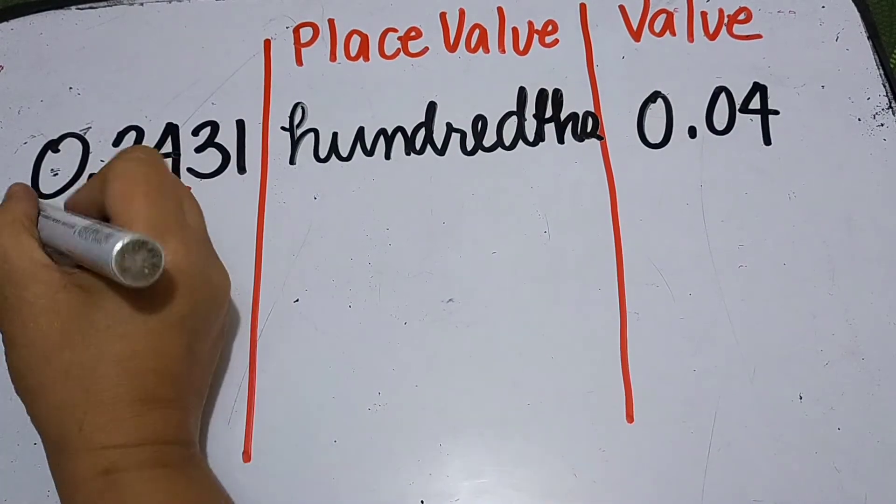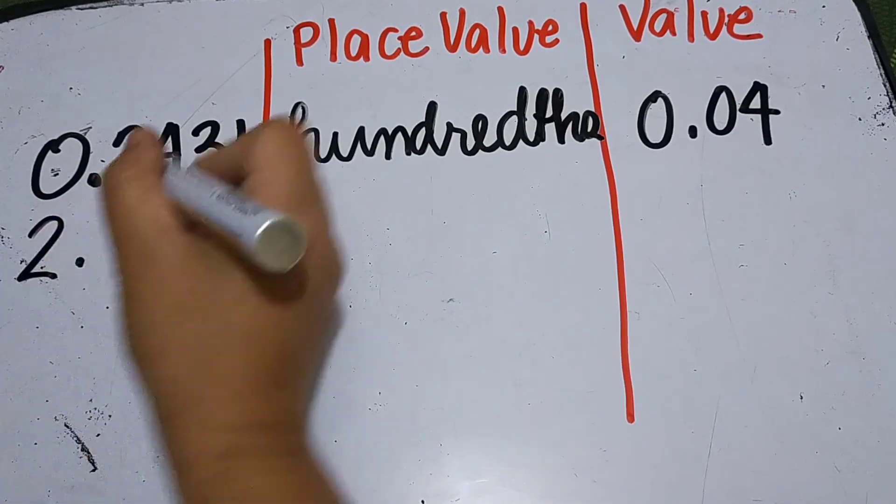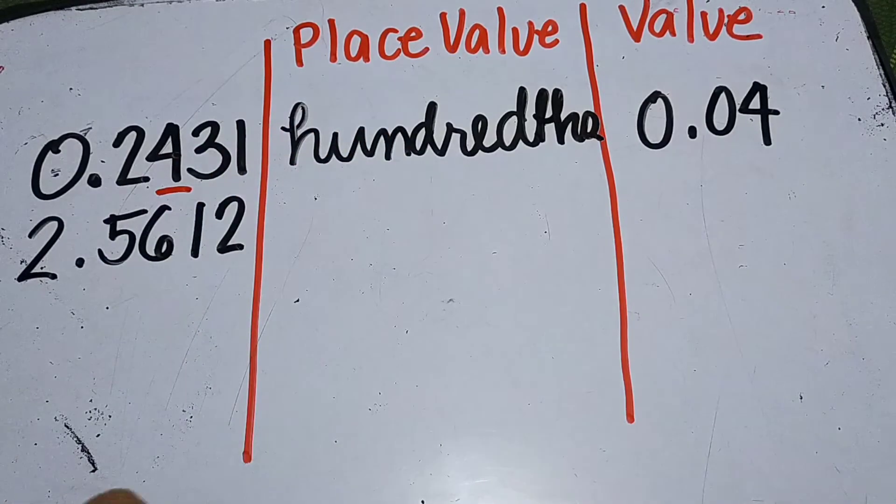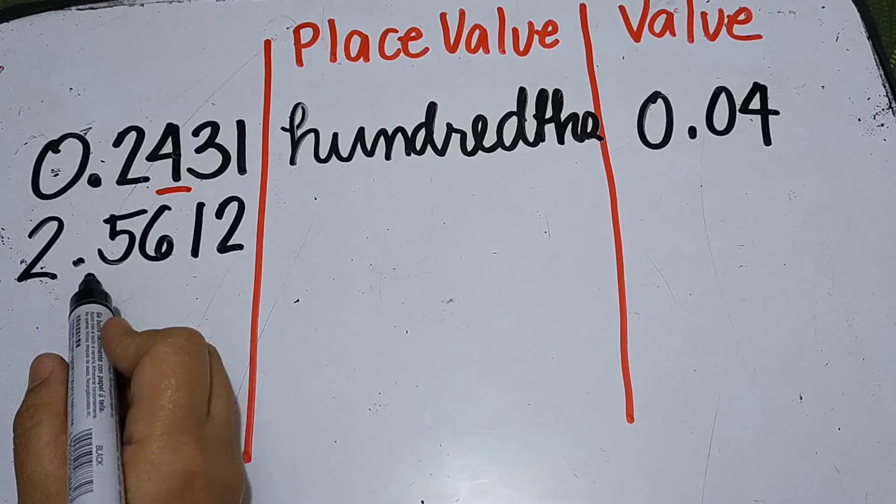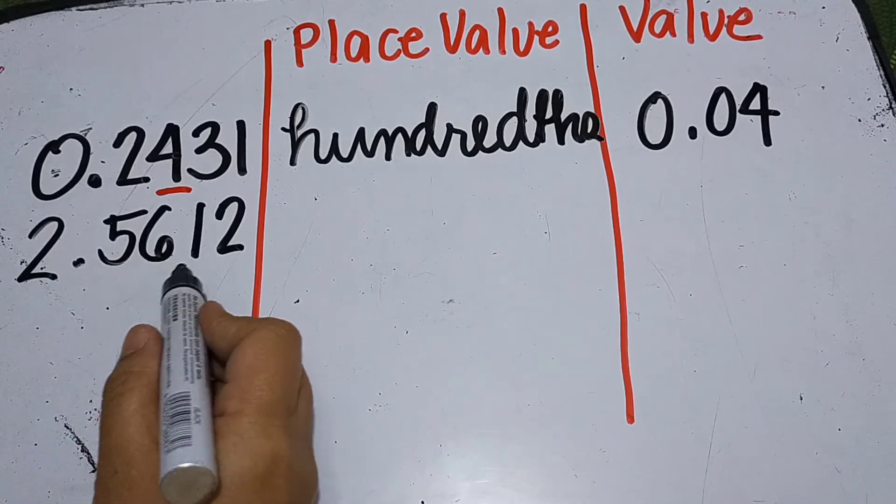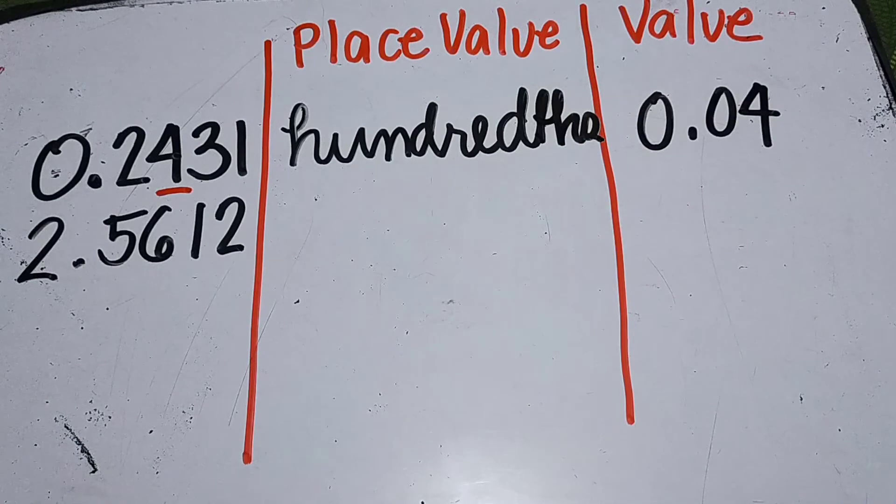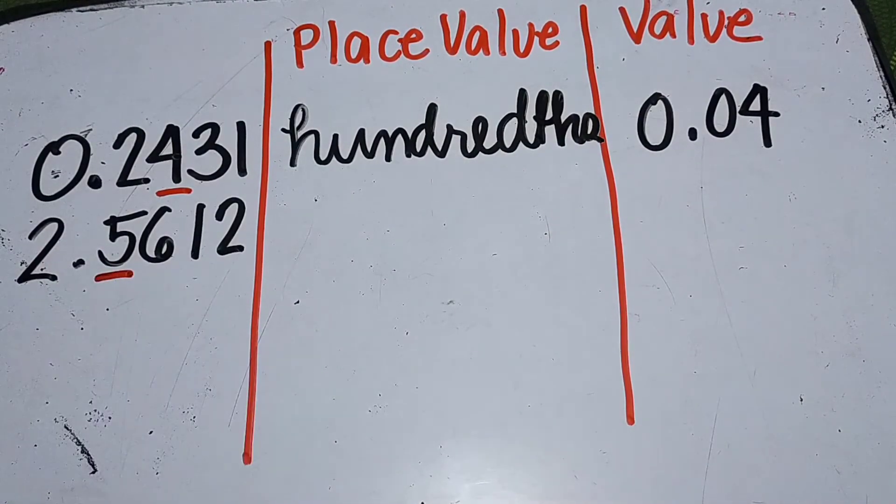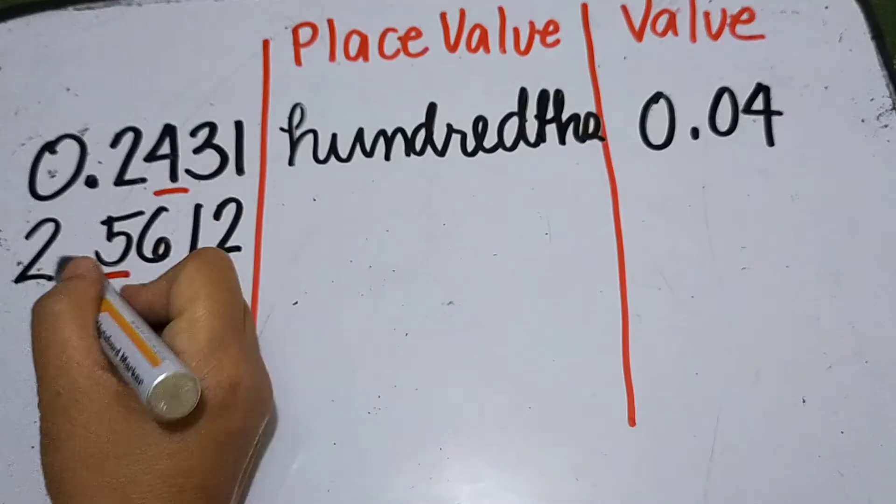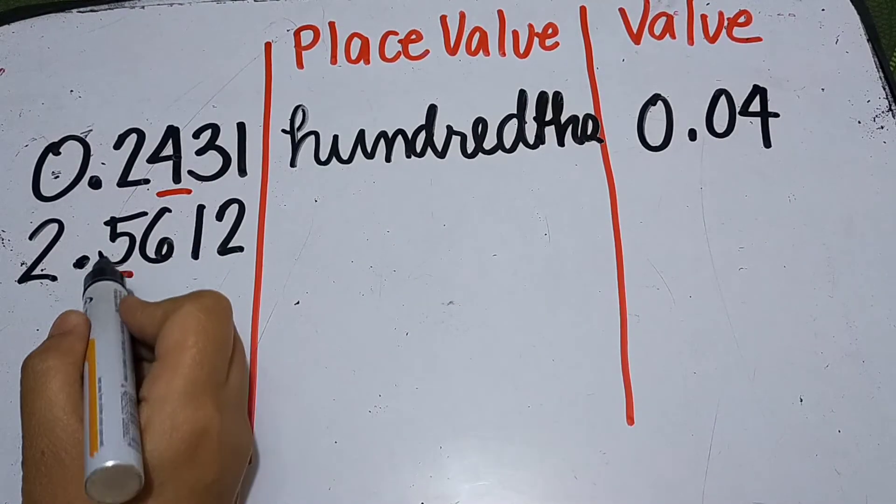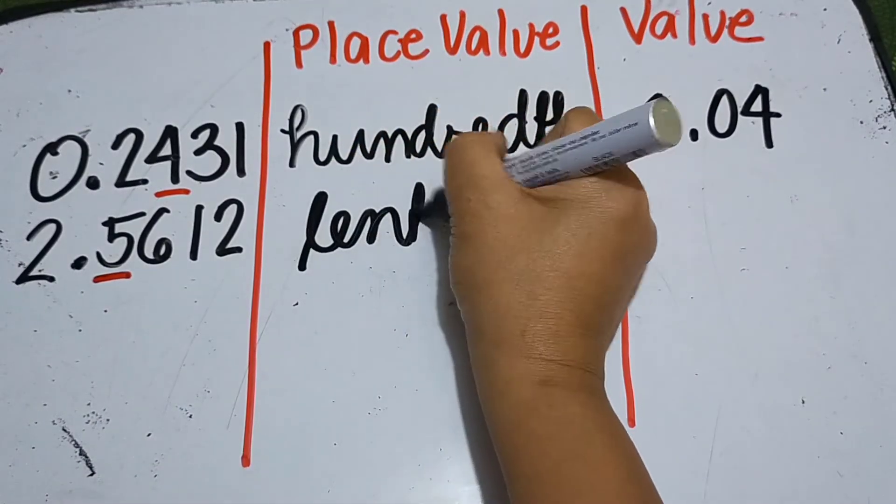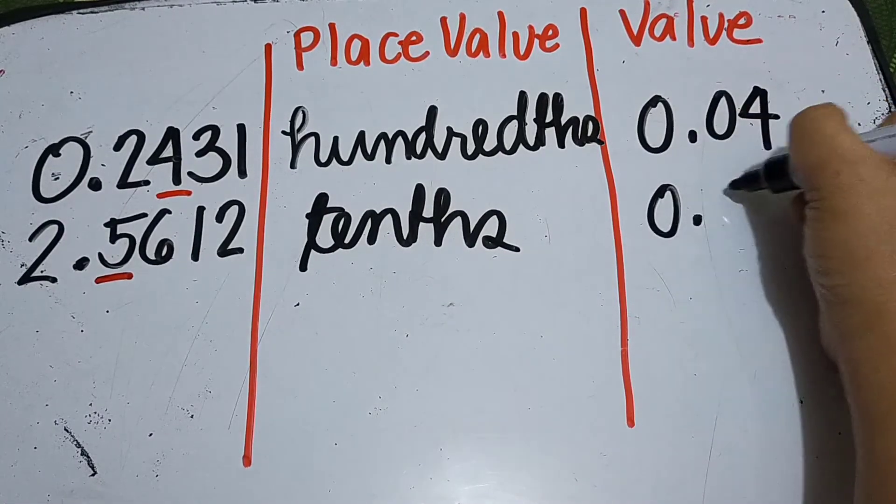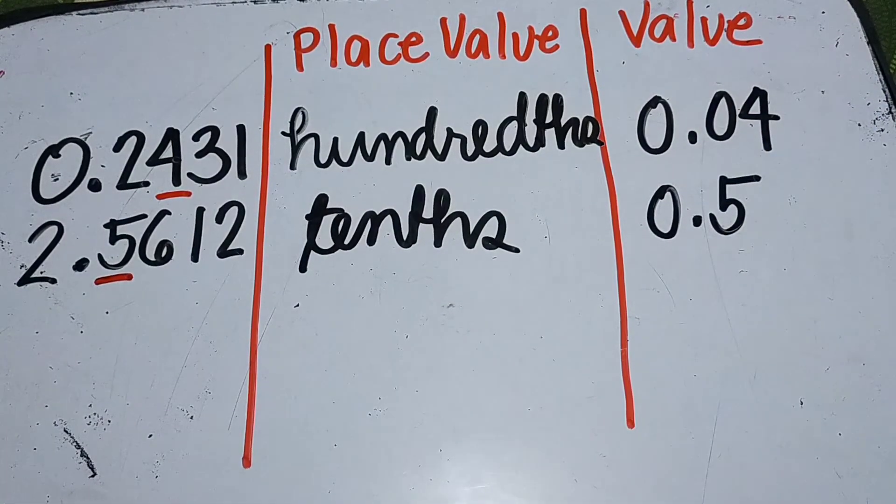Okay, another given. So let's read it first. Two and five thousand, six hundred, twelve ten thousandths. So let's find the value and place value of five here. Okay, so the place value of five is tenths. And then the value is five tenths.